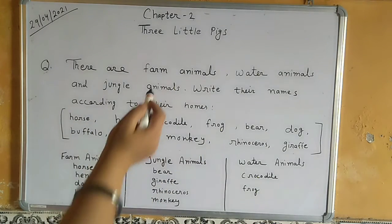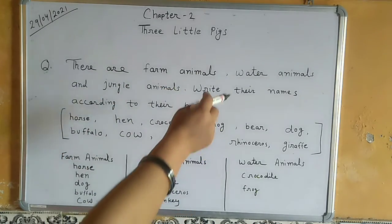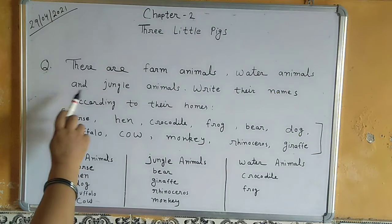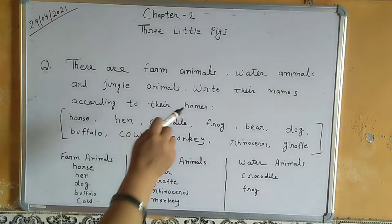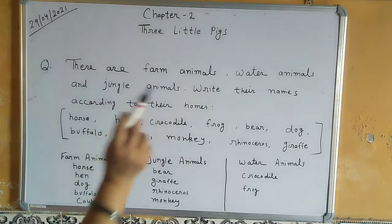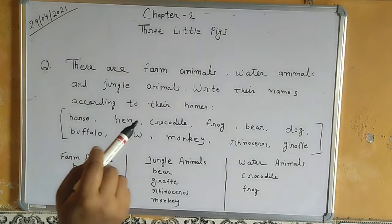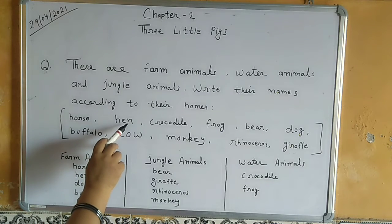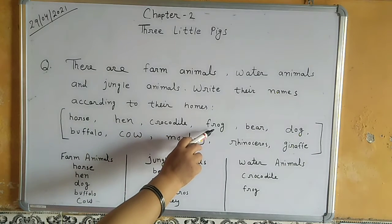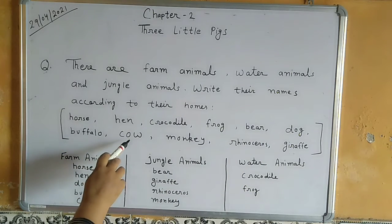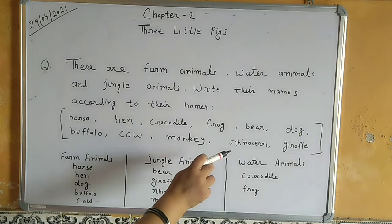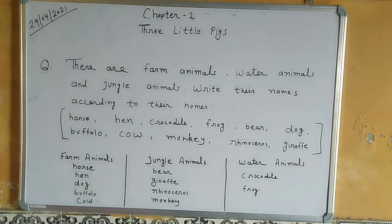So here we have some farm animals, some water animals, and some jungle animals. We will write their names according to their homes. So let's see what the animals are. Now let's separate these animals according to their homes.